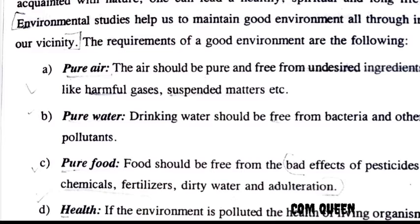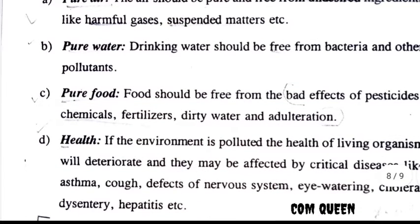The third requirement is pure food. The food should be free from bad effects of pesticides, chemicals, fertilizers, dirty water, and adulteration. In food items, pesticides, fertilizers, chemicals, and adulteration are harmful. That is a characteristic of a good environment.